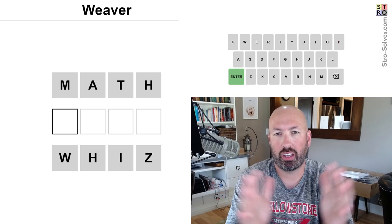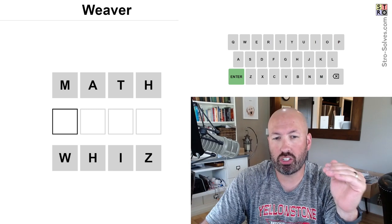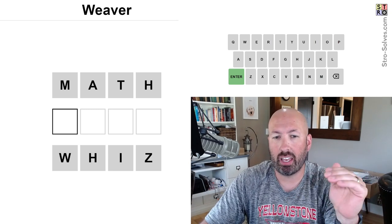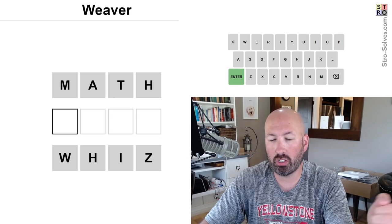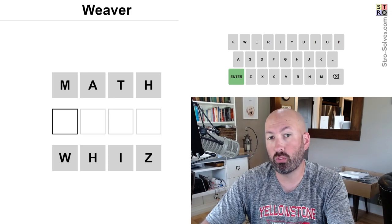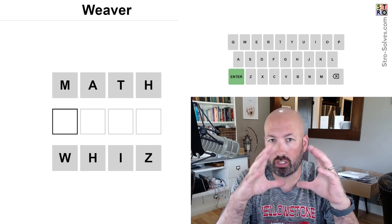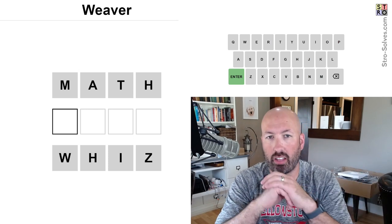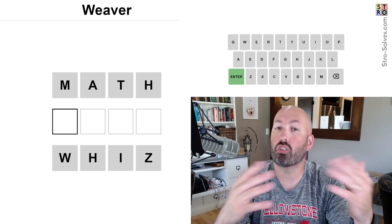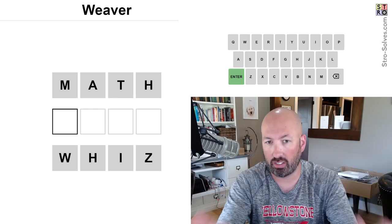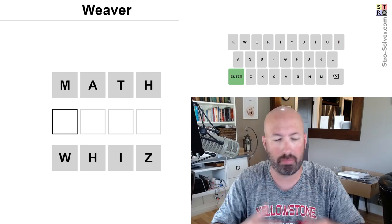So the way this works is it's like the old word ladder game where we're trying to change one letter at a time and get from the starting word to the ending word, ideally in as few moves as possible. But just getting it at all is the first step. If you can just make it from one word to the next, that's a success. And if you can do it in the optimal number, then that's sort of like a bonus success in my mind.